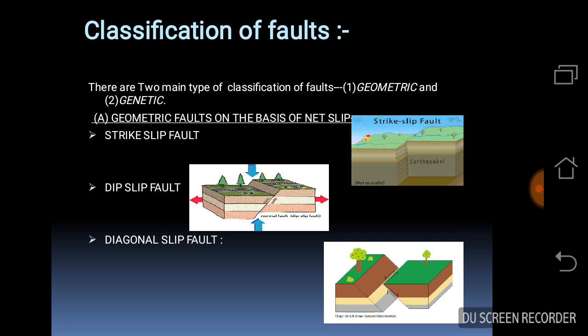On the basis of apparent movement, they are classified into normal fault, reverse fault, thrust fault, strike-slip fault, etc. A normal fault is one in which the hanging wall appears to move down relative to the footwall. A reverse fault is one in which the hanging wall appears to have moved up relative to the footwall. In this case, the fault plane dips towards the upthrow side.